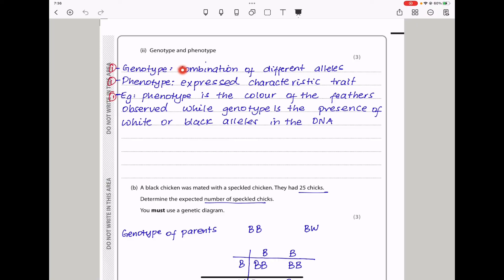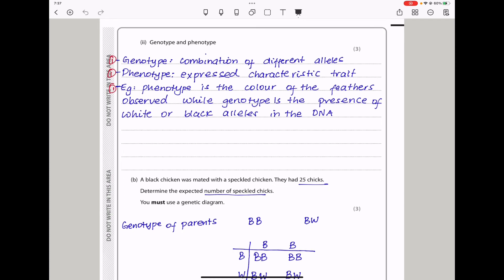The next is genotype and phenotype. Genotype is a combination of different alleles, like the one for black feathers and the one for white feathers, while phenotype is the expressed characteristic trait. An example of phenotype is the color of the feathers observed, while the genotype is the presence of the white or black alleles within the DNA.